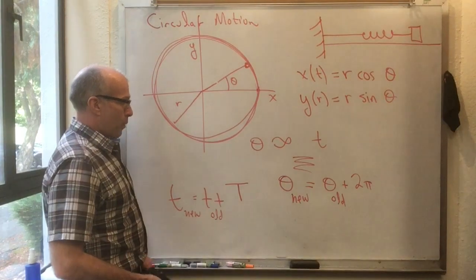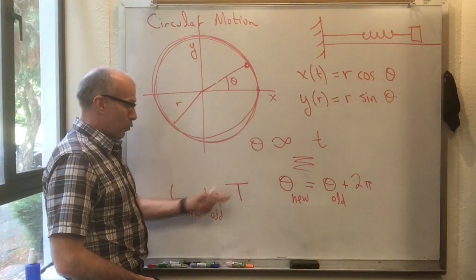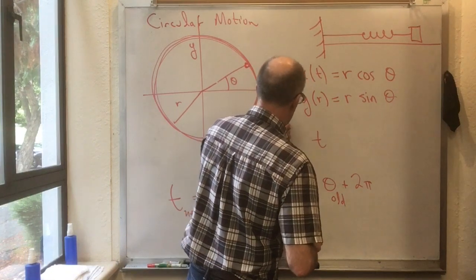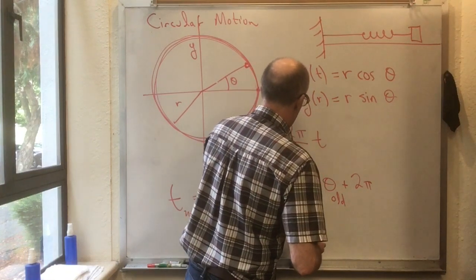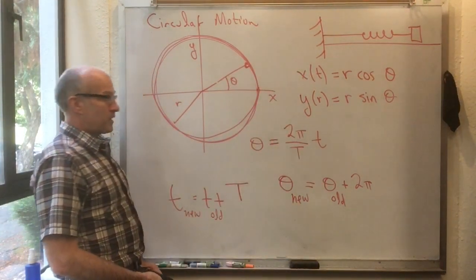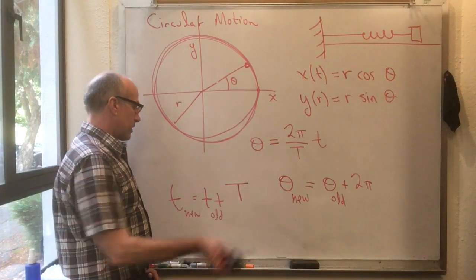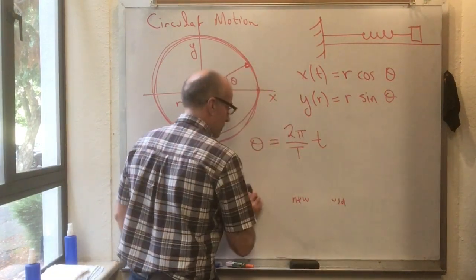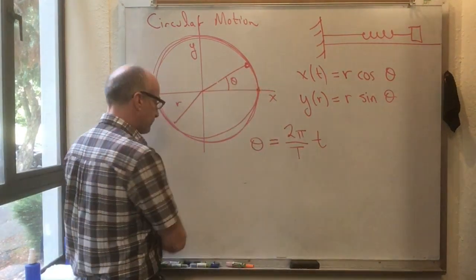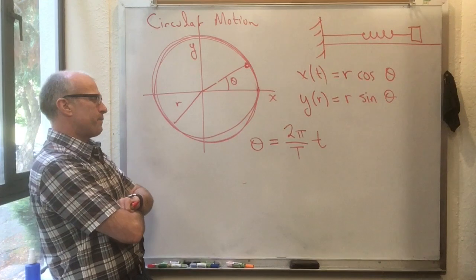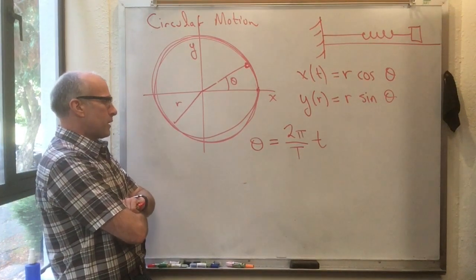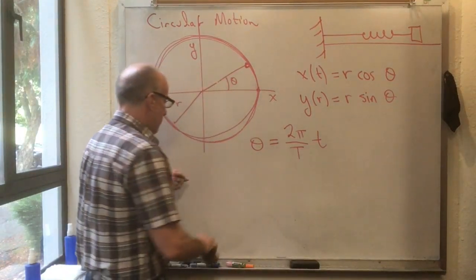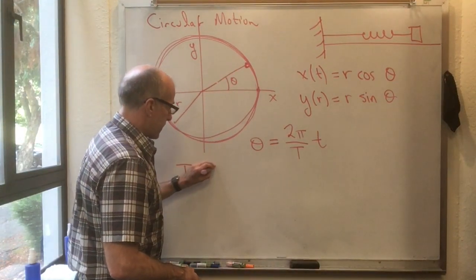The proportionality constant that makes this work is if you put theta is equal to 2 pi over capital T times t. And it works. Go check it. I did it in class, but there's no real reason for me to do that algebra for you. So there's our formula. Now we can write that formula a few other ways. As an example, if t is 3 seconds, so that means it takes 3 seconds to go all the way around.